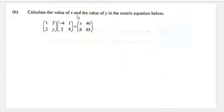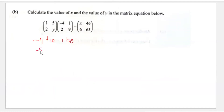Part b says calculate the values of x and y in the matrix equation shown below. This is a two-by-two matrix multiplication. One times negative four gives negative four, plus five times two gives ten. One times one gives one, and five times nine gives 45. Two times negative four gives negative eight, y times two gives 2y, two times one gives two, and nine times y gives 9y. This equals the matrix with x, 6, 46, and 65.